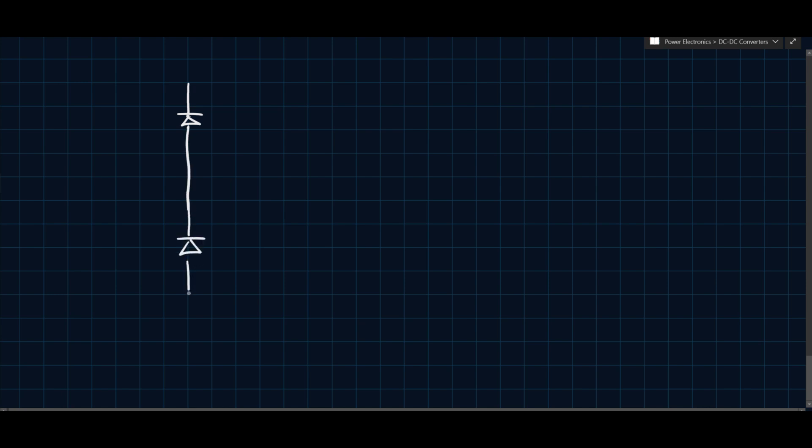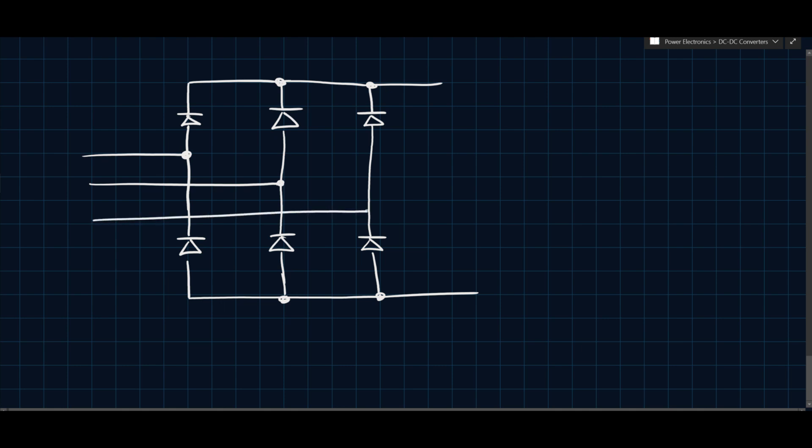Essentially it's the connection of three half bridges, as most three-phase, or most of the most common three-phase topologies are. They're essentially just three phases of half bridges connected, the three-phase inverter being another one like that. This is the DC side here, and we're going to have three-phase AC input like this, and for some reason we've completely disregarded the grid lines, but that's okay.